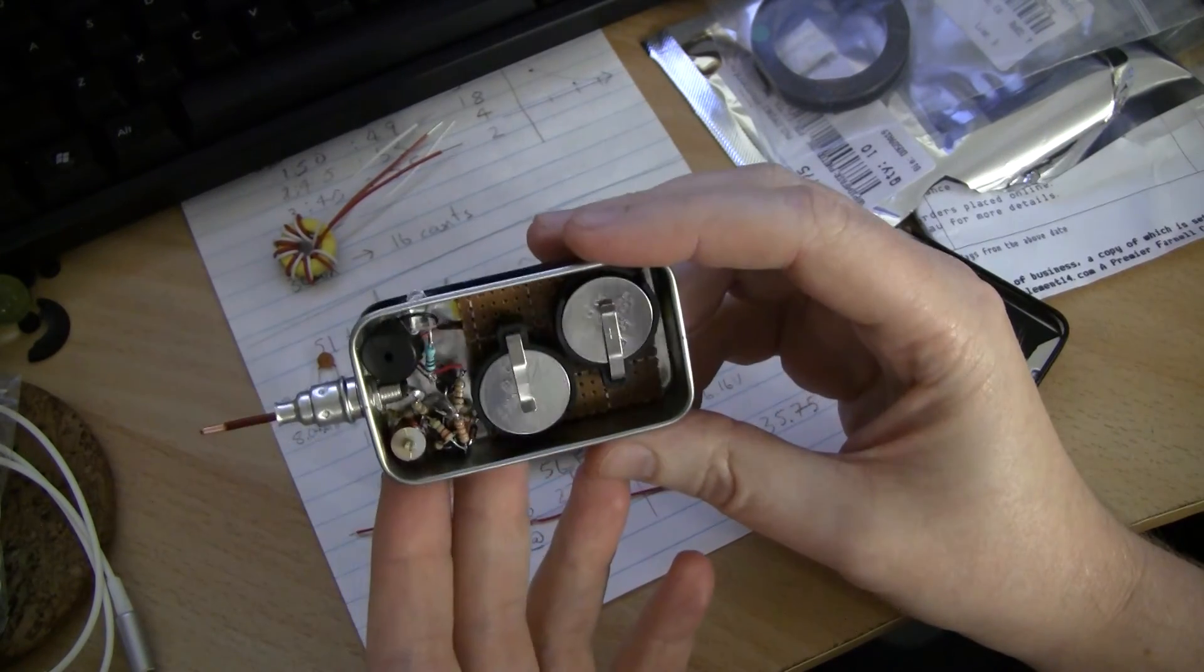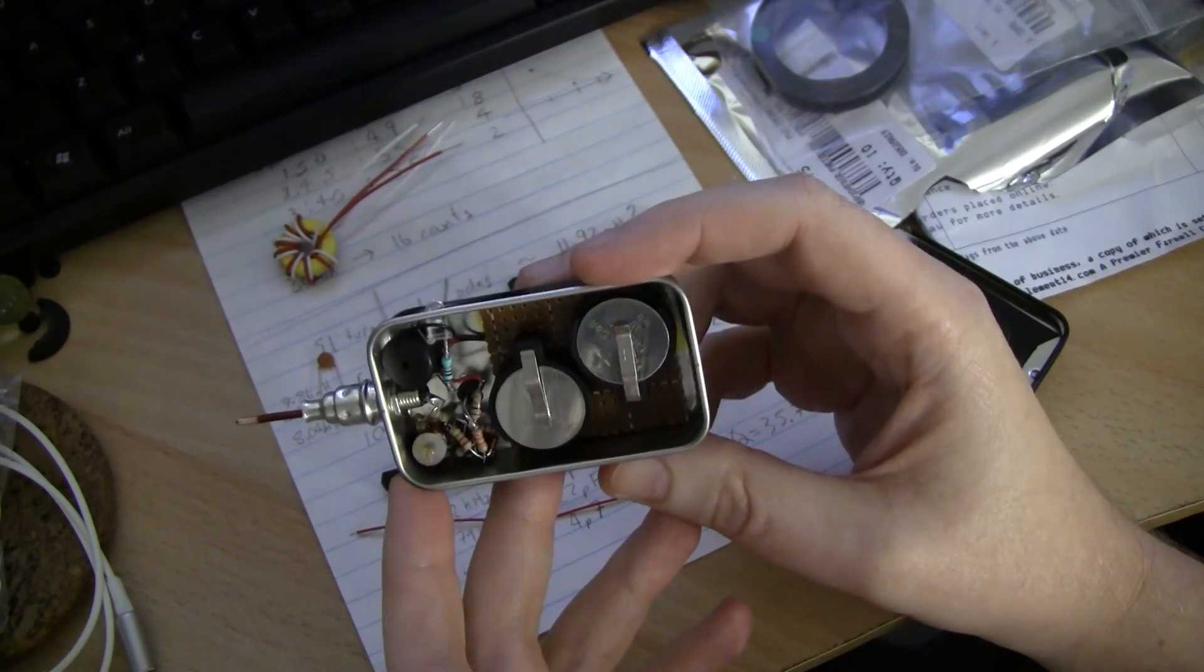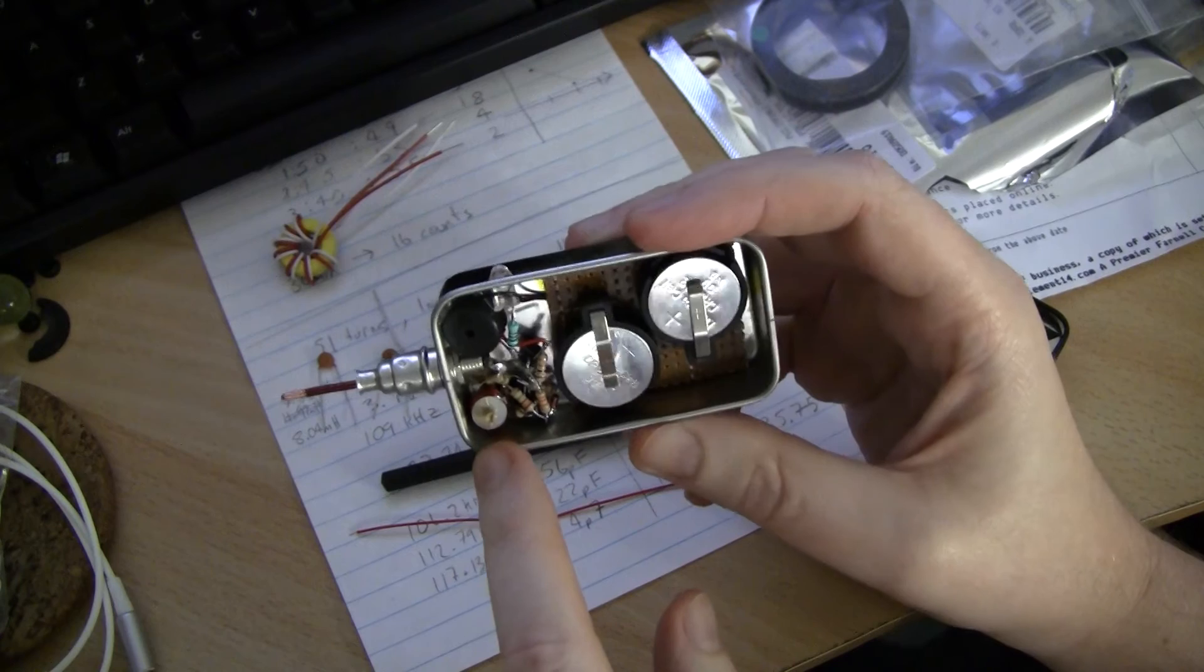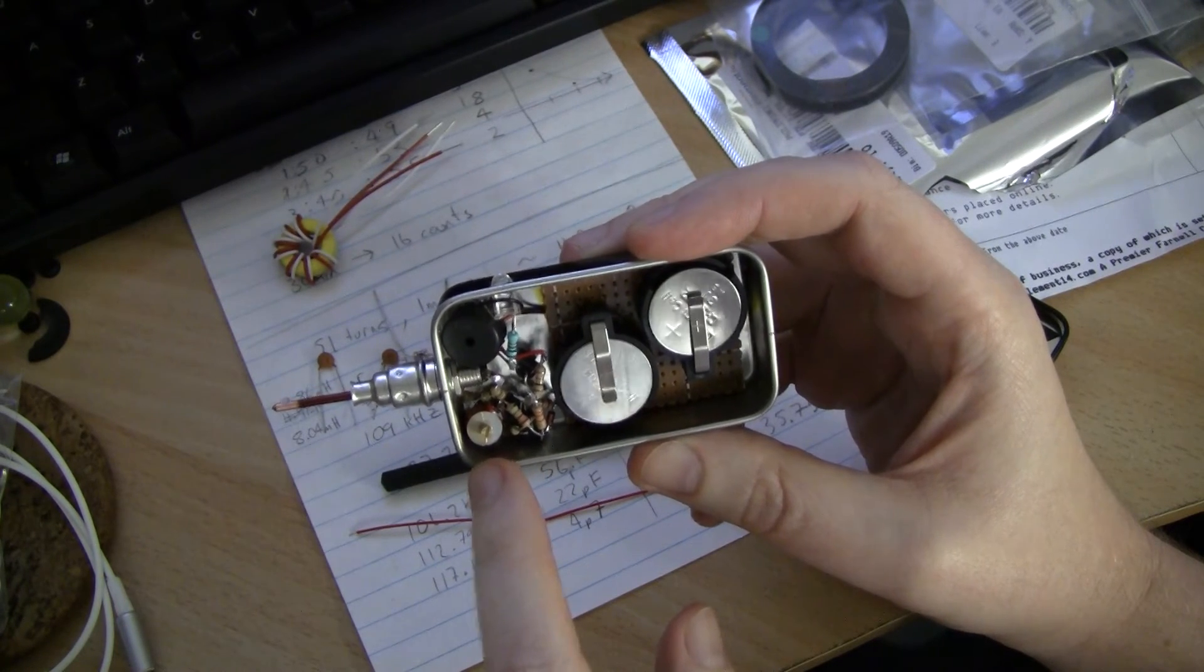Power supply is just two lithium cells that I've put in holders to make them a little easier to change, although I don't expect to have to change them very often. The trimmer capacitor here biases the circuit until it's just about to oscillate with the load capacitance.